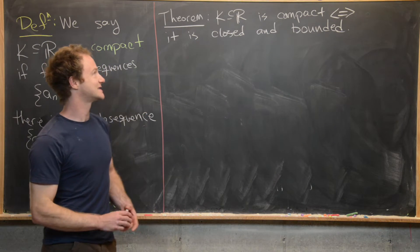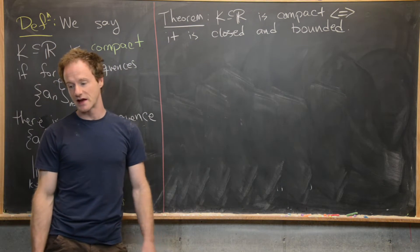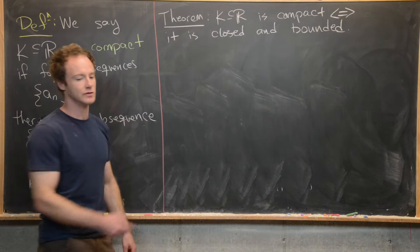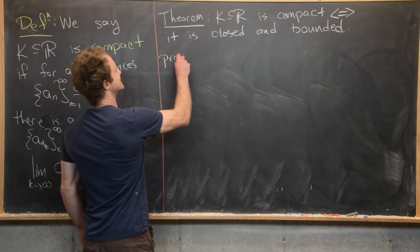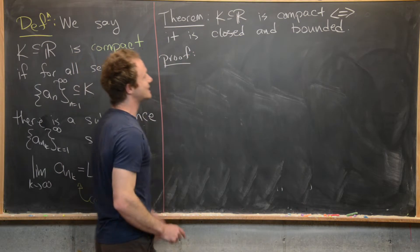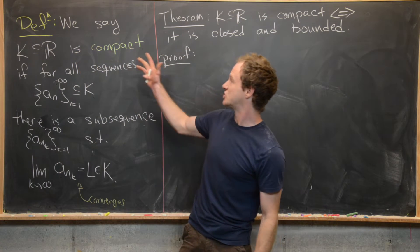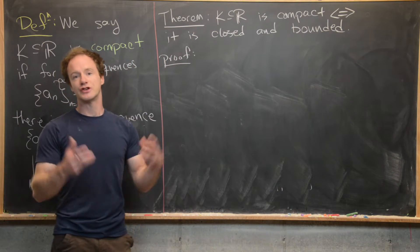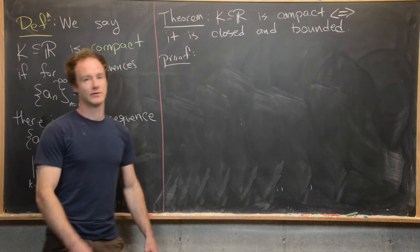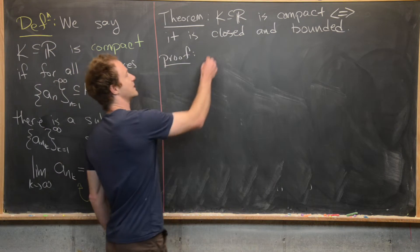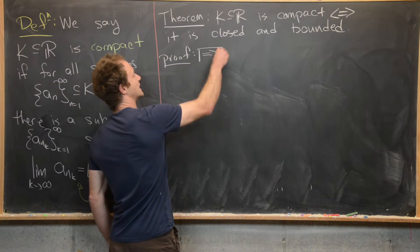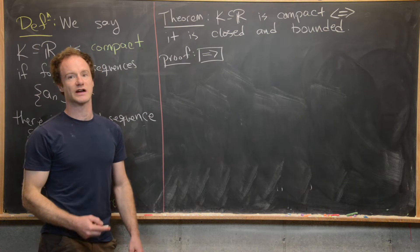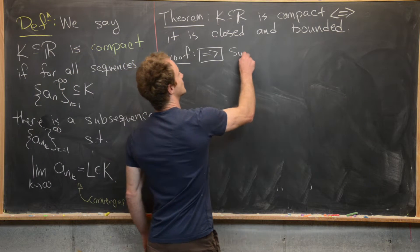It's the following classic theorem: K, a subset of ℝ, is compact if and only if it is closed and bounded. This is a nice if-and-only-if statement, which means we could really just exchange the definition of compactness to this notion of being closed and bounded. So let's look at the proof of this. Since this is if and only if, we need to do two directions. Let's do the forward direction first.